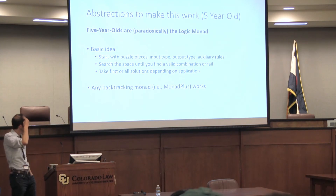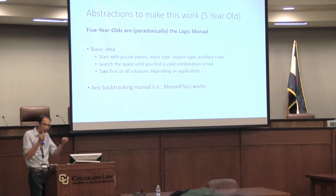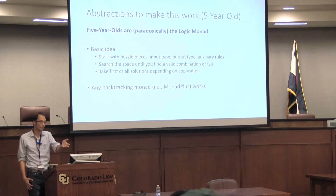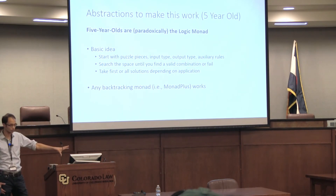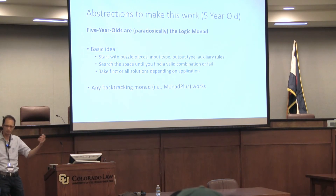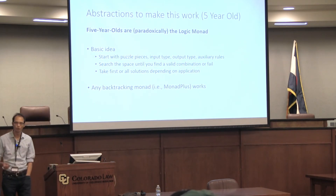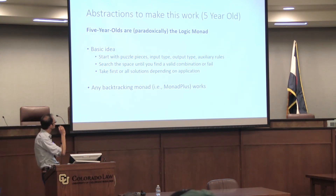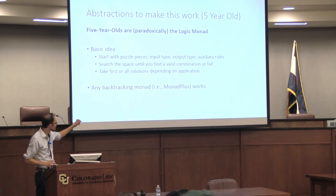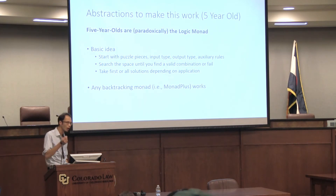What are we going to do for the five-year-old? Five-year-olds are paradoxically the logic monad. The big idea is: instead of the programmer putting together the pieces, this is something an automated assembly algorithm can do. Functional programmers really like composable pieces — taking two things of type A and putting them together to make a different type. This goes a step further: it's so easy that we could write a program that does it automatically. You can use any kind of backtracking monad to search this space and put together all the puzzle pieces without, as a programmer, having to do all the wiring yourself.